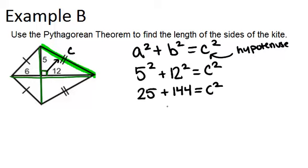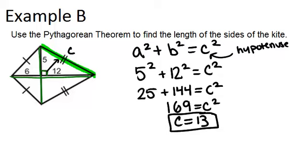Because 25 plus 144 is 169, that means 169 is C squared. Square root both sides, and you get C equals 13. C could technically also equal negative 13, but that doesn't make sense in the context of this question because you can't have a negative length. So that means each of these sides are 13.